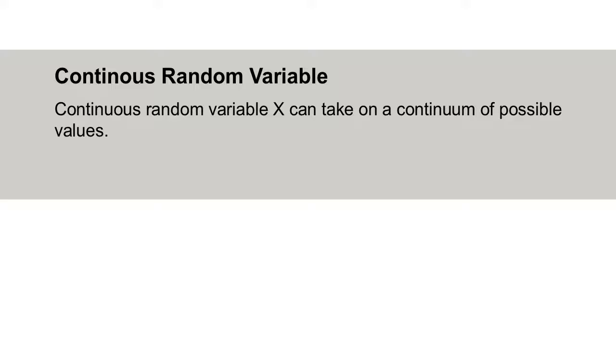Let's dive right in with a definition. A continuous random variable X can take on a continuum of possible values — some people would say an uncountably infinite number of values. For example, many variables in everyday life are not discrete; they don't jump from value to value.